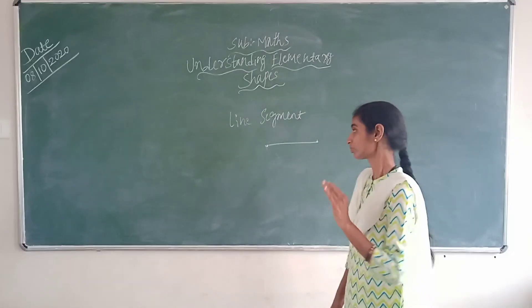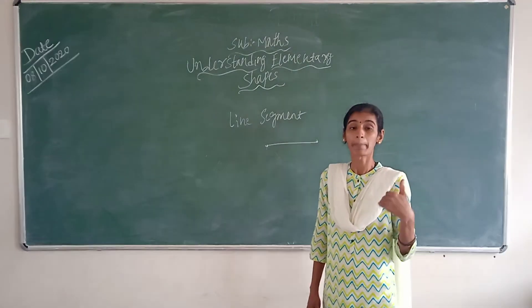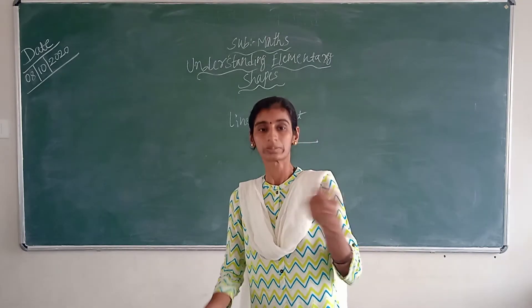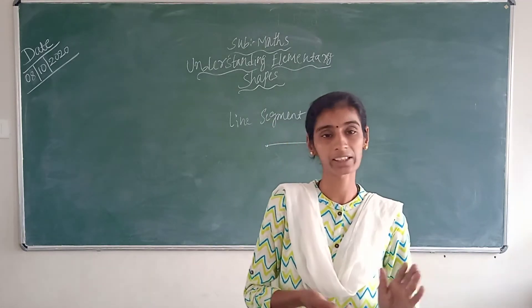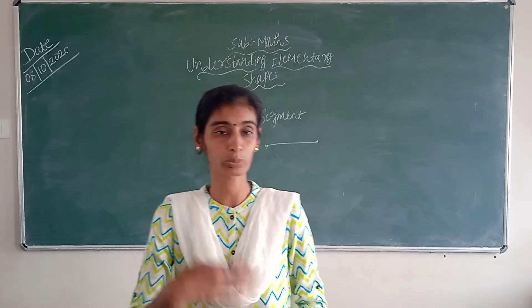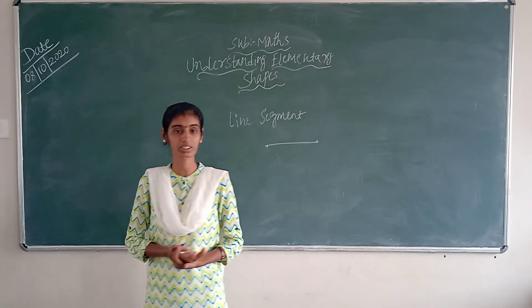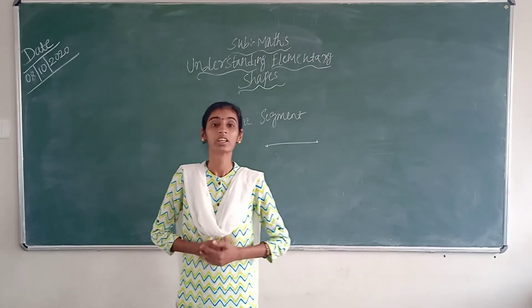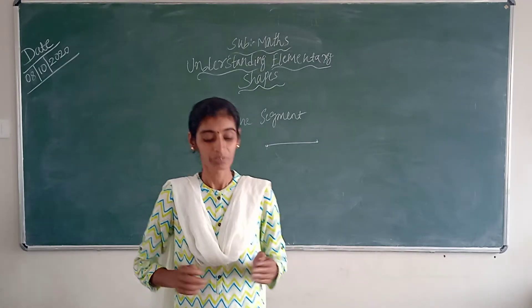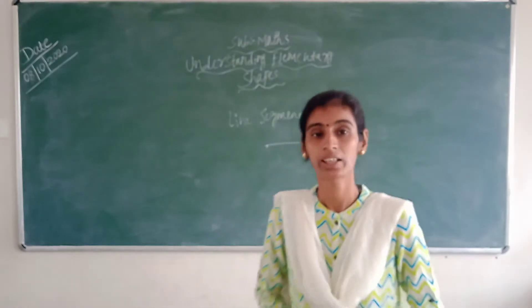Now, in today's class, we are going to learn about the measuring of angles. So you all know, as I said, the angles will be less than 90 degrees, and an obtuse angle will be more than 90 degrees, less than 180 degrees. Now, how to measure the angles, we are going to study in today's class.